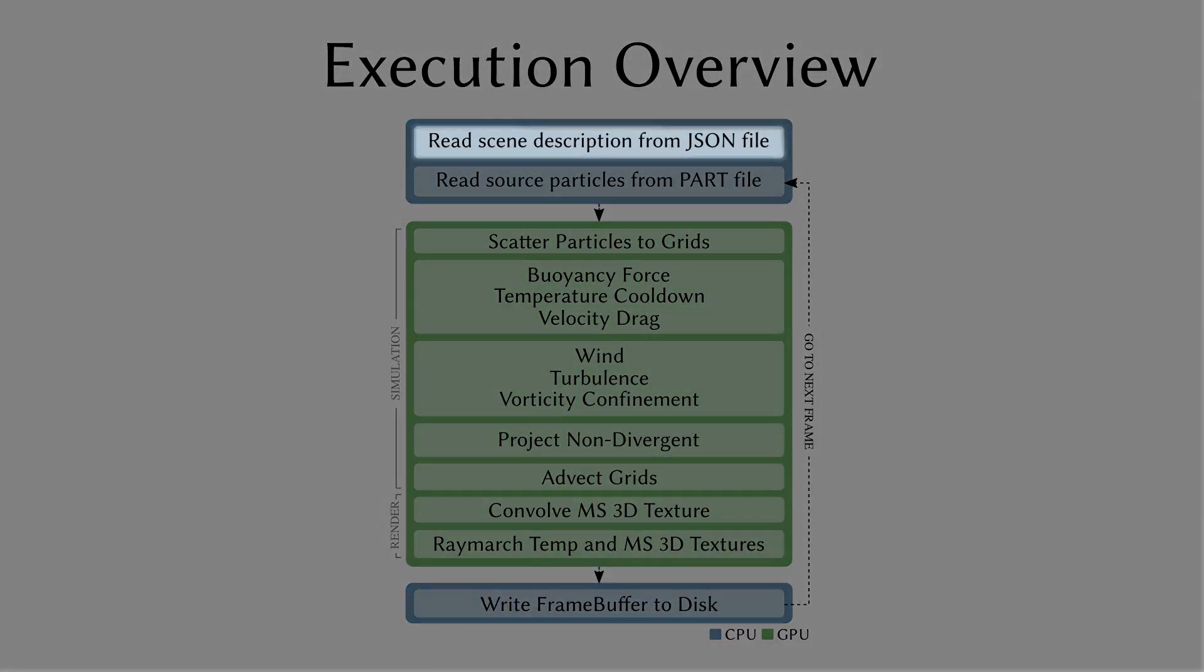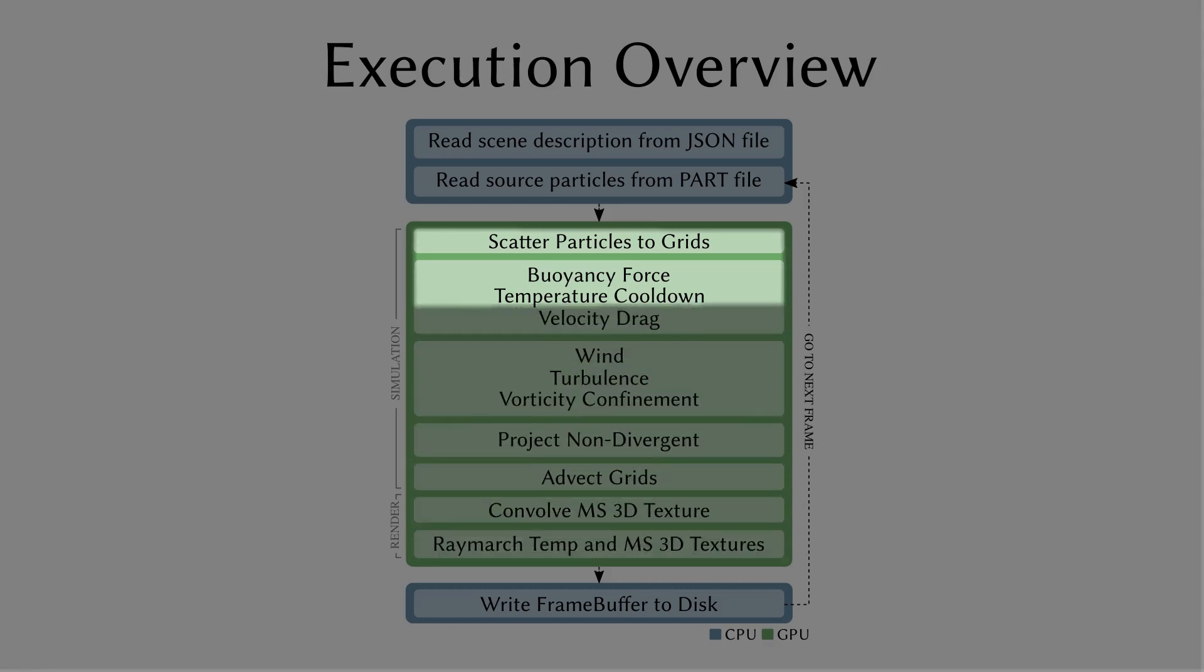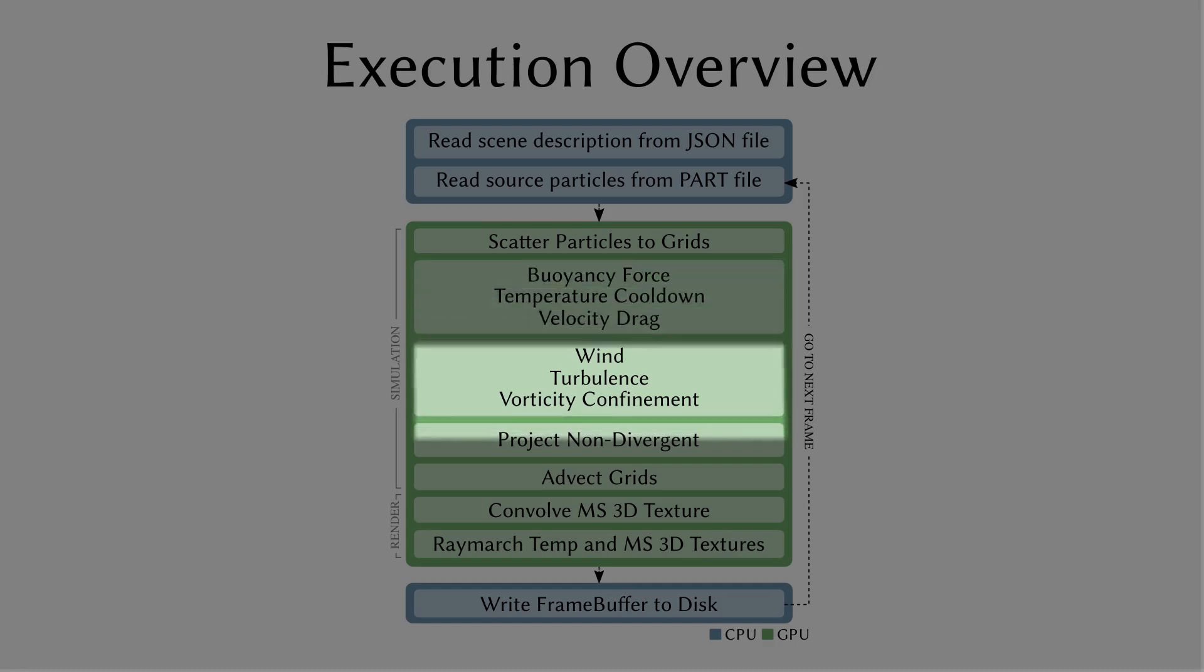First, the scene description is read and parsed by the CPU, then the particle file associated with the first frame is read and copied to GPU memory. From this point, all following steps, excluding the writing of the rendered image to disk, will be performed on the GPU. The source particles are scattered to grids, the body forces are applied, non-divergent projection is performed, and the grids are finally advected.